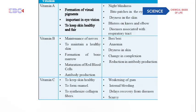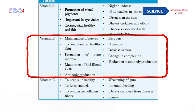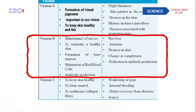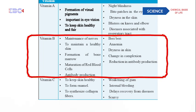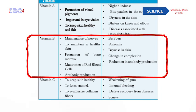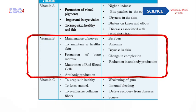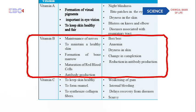The second type is vitamin B. The uses of vitamin B include maintenance of nerves, maintaining healthy skin, formation of bone marrow — which is important for producing cells in our body — maturation of red blood cells, and antibiotic production. Especially for these functions we need vitamin B.